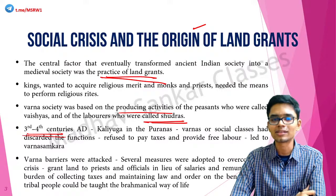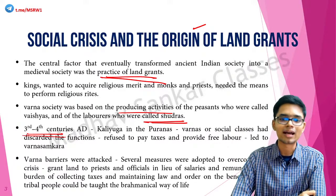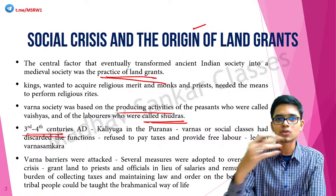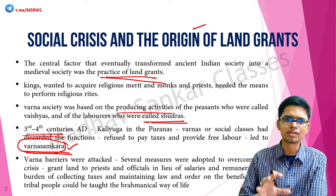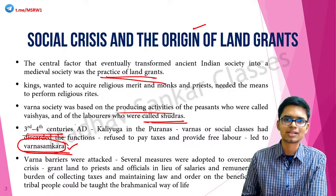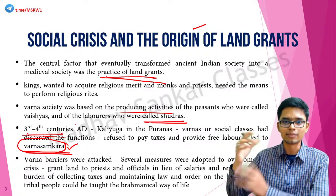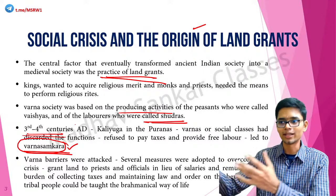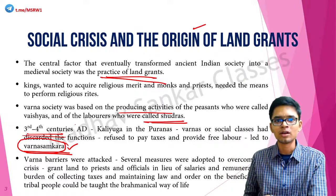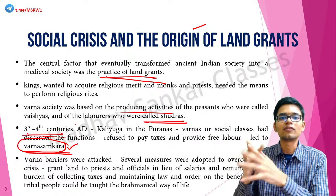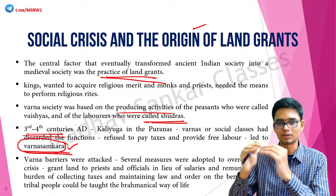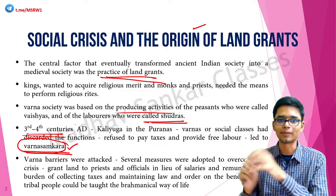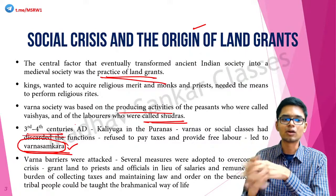In the 3rd and 4th century AD, we find instances where lower classes refused to pay taxes and provide free labor. We also see some kind of Varna Sankara during this period. Due to various processes such as arrival of foreigners, intermingling between various classes, and induction of tribals into the Brahmanical order, mixing of different Varnas caused more and more sub-castes and subdivisions within Varnas to emerge. This intermixing is known as Varna Sankara.